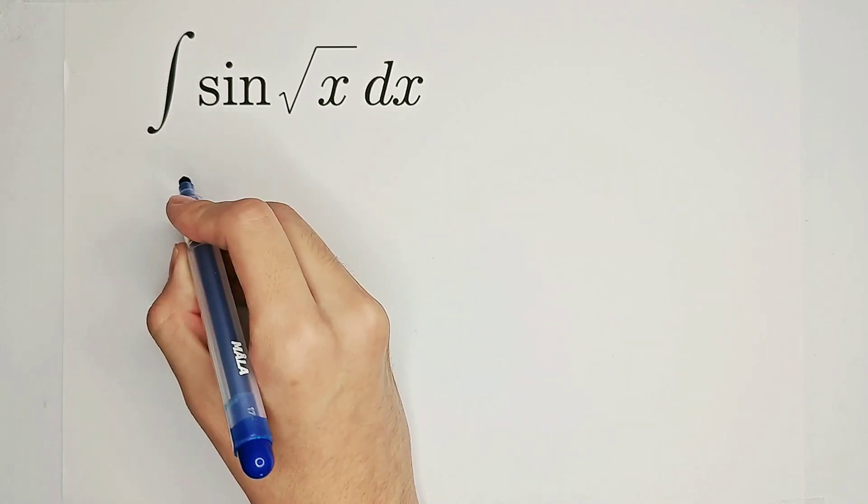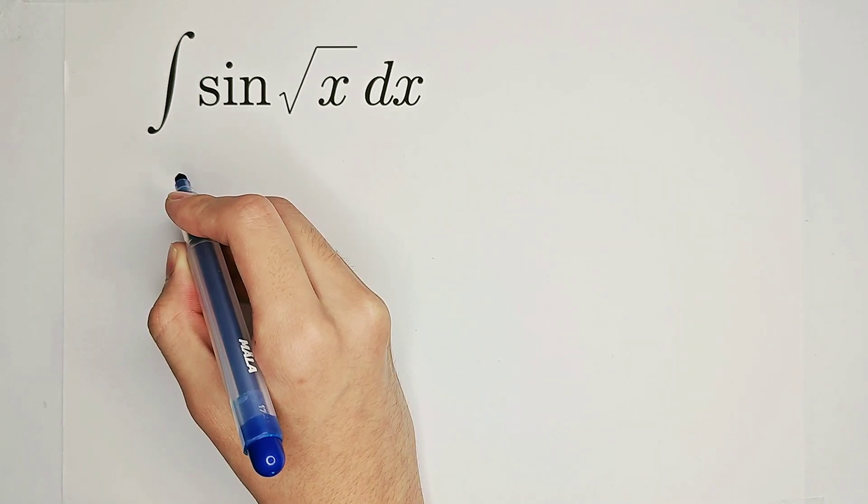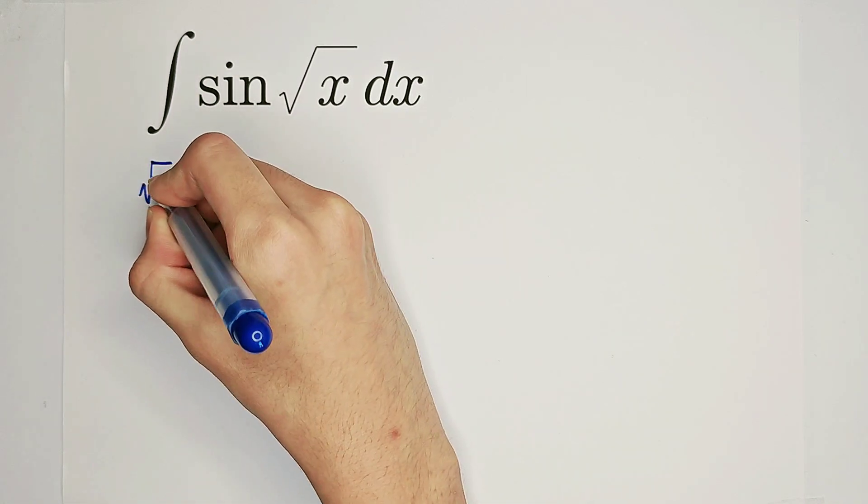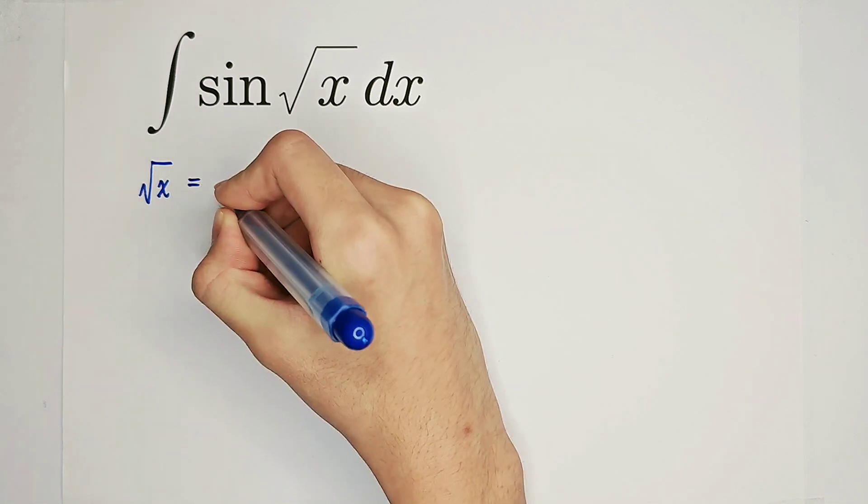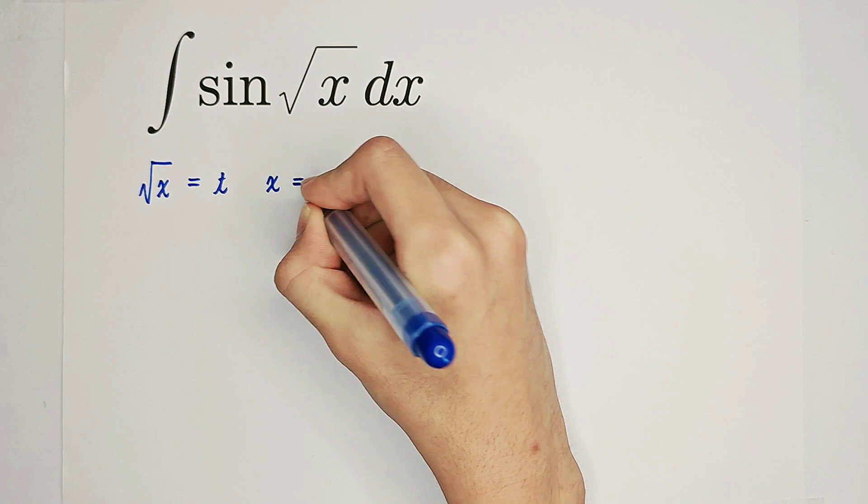Okay, so the first step is to substitute, and we substitute square root of x. Let it be equal to t. Then what is x? x is t squared.